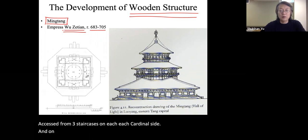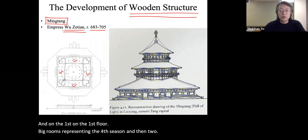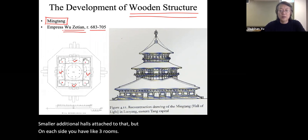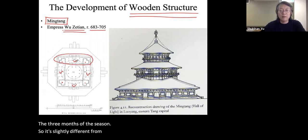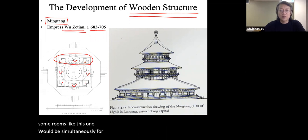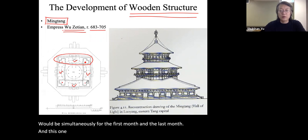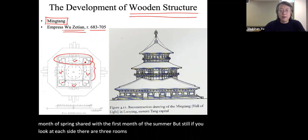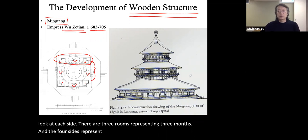On the first floor were four big rooms representing the four seasons, with two smaller additional halls attached. On each side there were three rooms representing the three months of a season—some rooms were shared simultaneously between the last month of one season and the first month of the next. Looking at each side, three rooms represent three months, and the four sides represent four seasons. This is the reconstruction of that building.